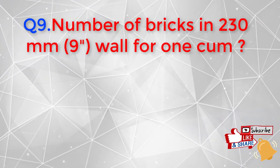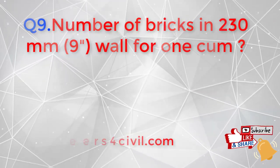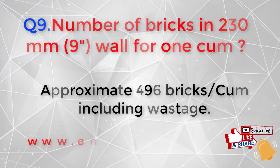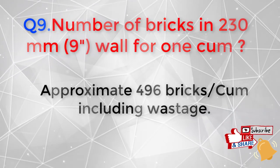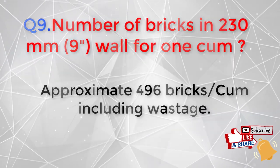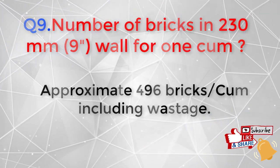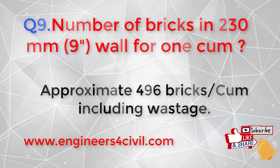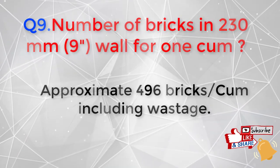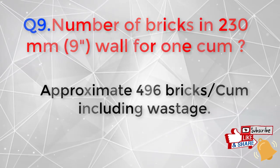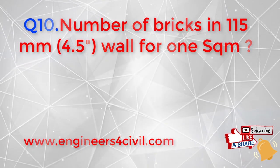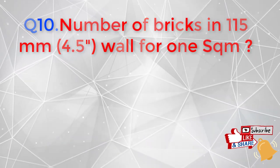The ninth question is: what is the number of bricks in a 230 mm thickness wall (9-inch wall) for one cubic meter? One cubic meter is a cube of side one meter. If you place bricks in that cube, approximately 496 bricks are needed per cubic meter.